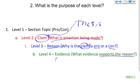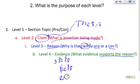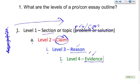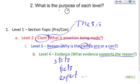The evidence comes out of your research. It can be stats, facts and figures, expert opinion, or scholarly studies, and so forth. By now you should be able to answer the first two questions: what are the different levels of a pro-con essay outline, and what is the purpose of each level? Make sure you know those things at this point.